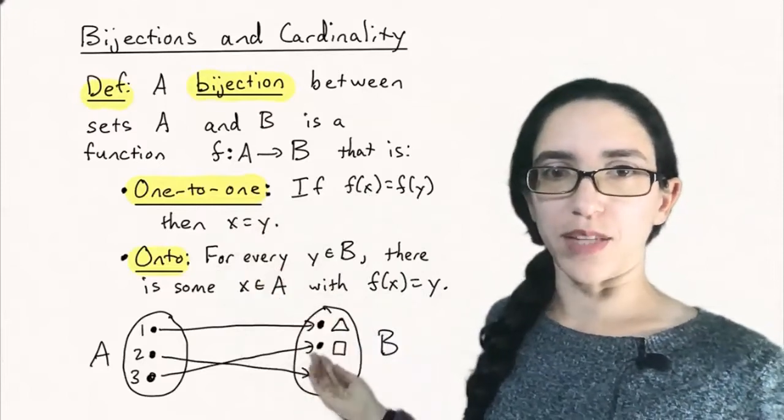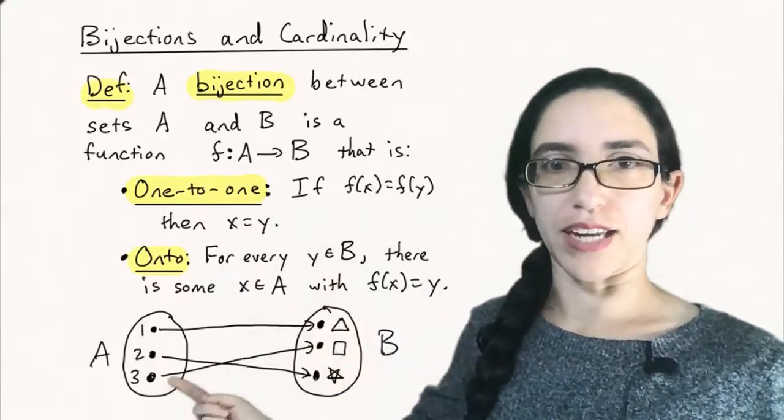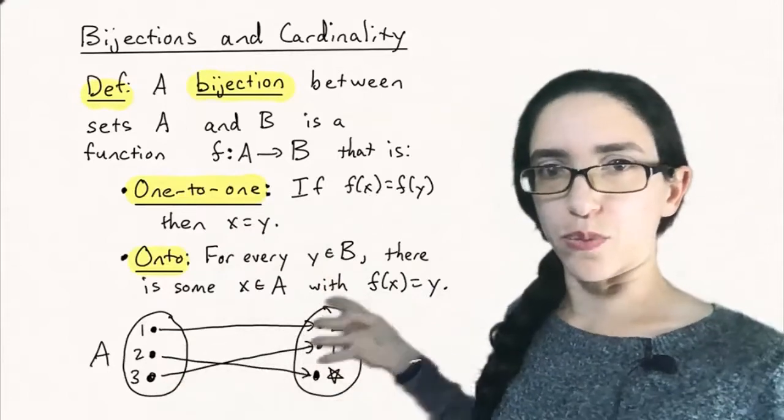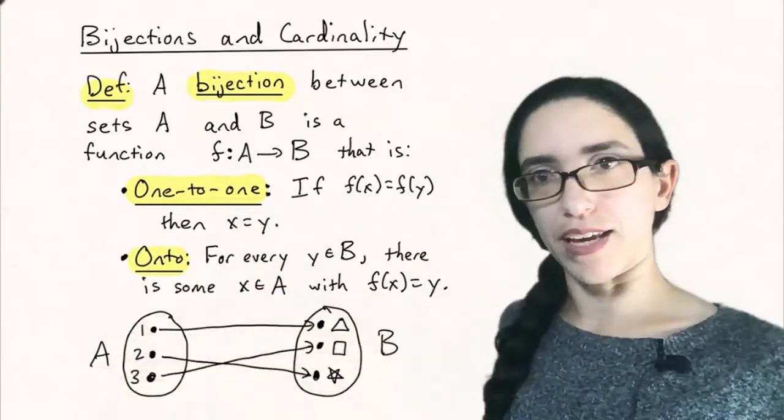Now onto means that every element of B is hit by some arrow. For every y in B there's some x in A that maps to it under F. So that means it's a one-to-one and onto correspondence and it's a perfect matching between the elements of A and the elements of B.